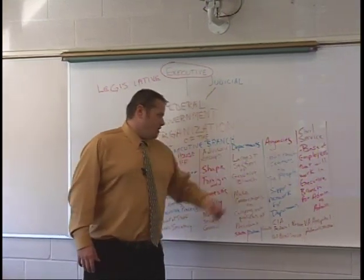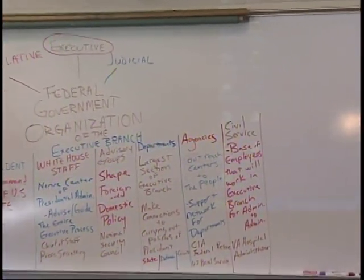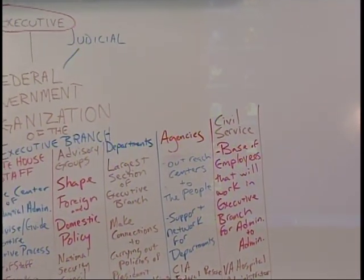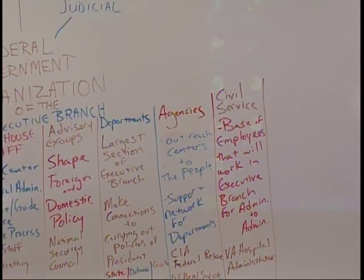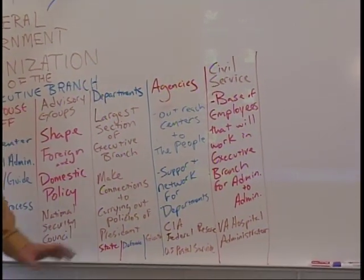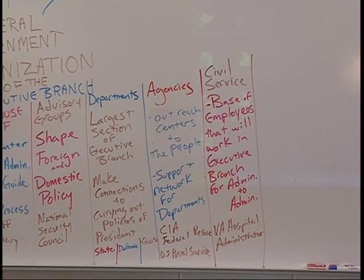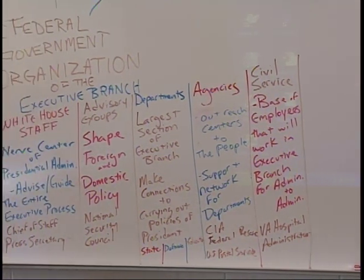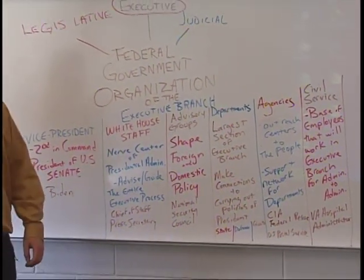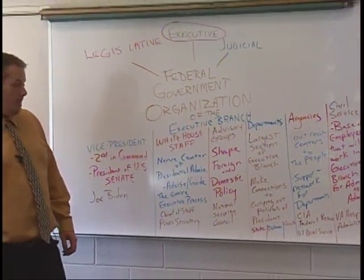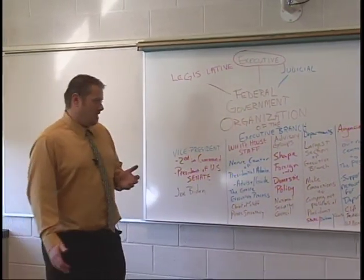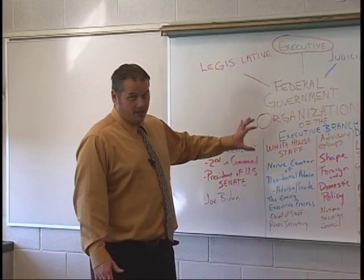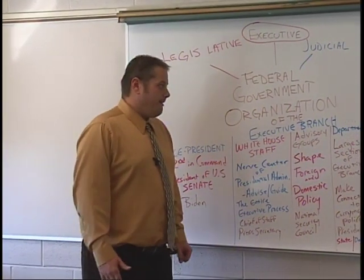There are executive agencies — outreach centers to the people. These are the things that people are connected to; they can reach out and touch these groups. They are a support network for all the departments, which eventually are a support network to the president of the United States. The CIA, or Central Intelligence Agency, the Federal Reserve, and the U.S. Postal Service are examples of these executive agencies that are part of the executive branch of government at the federal level.